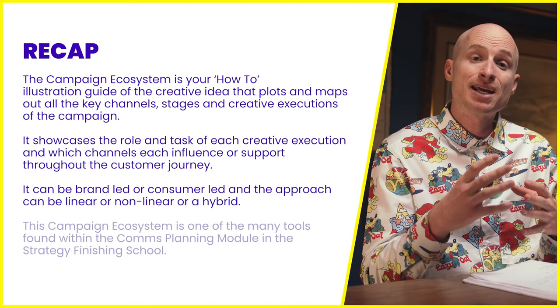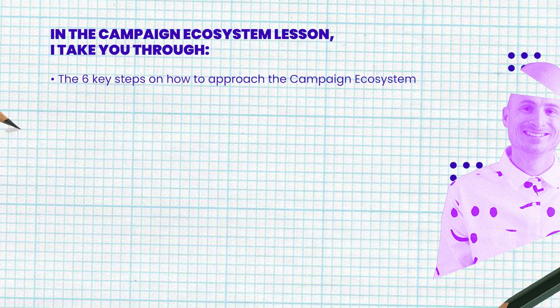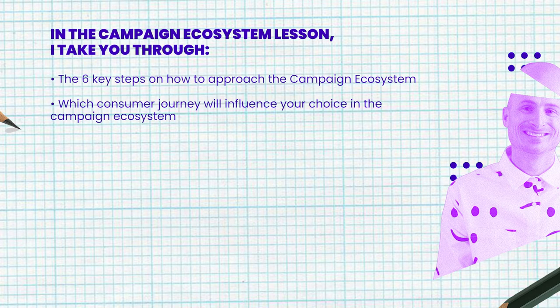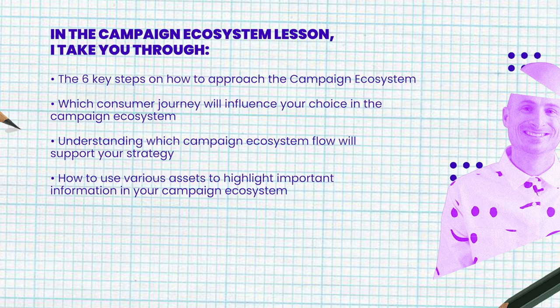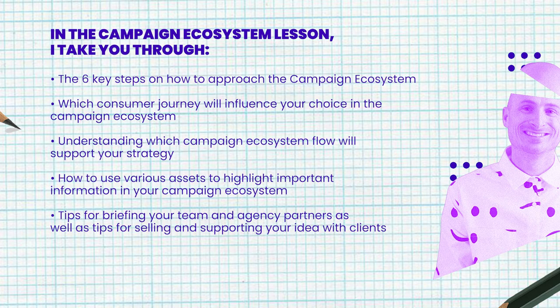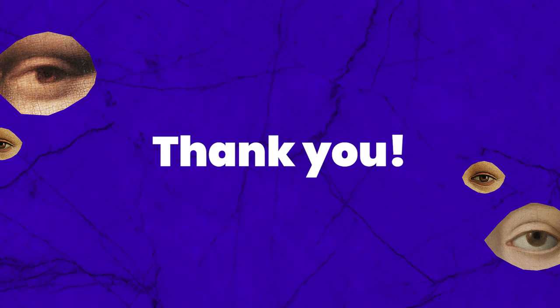The campaign ecosystem is one of the many tools within the comms planning module in the Strategy Finishing School. In the campaign ecosystem lesson, I take you through the six key steps on how to approach the campaign ecosystem, which consumer journey will influence your choice, understanding which campaign ecosystems flow with the support of your strategy, and how to use various assets to highlight important information. Also, tips for briefing your team and agency partners, as well as tips for selling and supporting your idea with clients. And finally, access to the framework factory — your framework playbook with over 50 ready-made frameworks to save you time, articulate your ideas, and win more work.